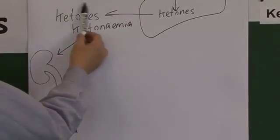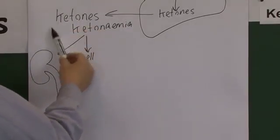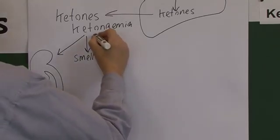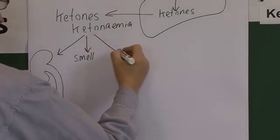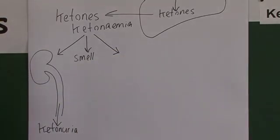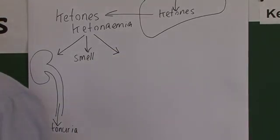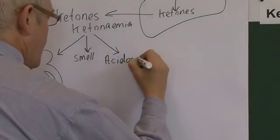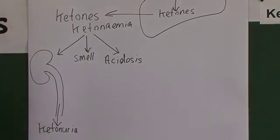But of course, remember the ketones - two of the ketones are acids. So you get high levels of ketones in the blood. The acetoacetic acid and the beta-hydroxybutyric acid in the blood means that we get high levels of acid. There's an acidosis.